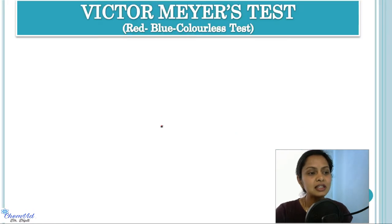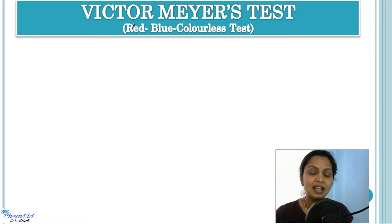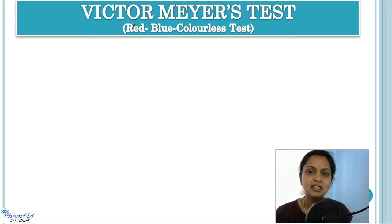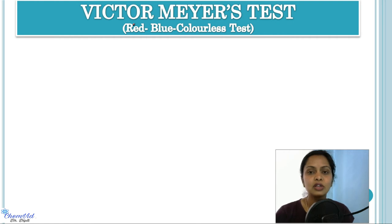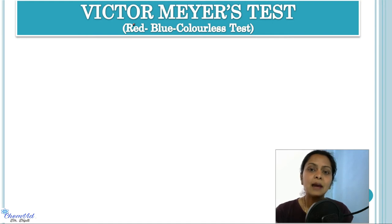The first test we will study is the Victor Mears test. We call it the red, blue, and colorless test, which helps us remember the results. It is a very simple test with three main steps. Primary, secondary, and tertiary alcohols can be easily distinguished using this test. We will first see the steps theoretically and then write the reactions.